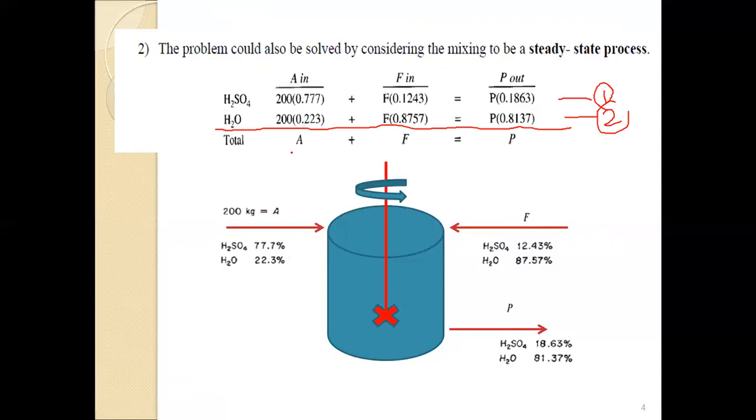So for the first material balance, 200 kg which represents the total stream, times the weight percent of sulfuric acid, plus the second input to the tank F times the weight percent of acid, will equal the product or output, which is also unknown.